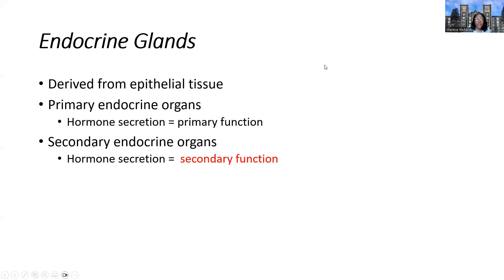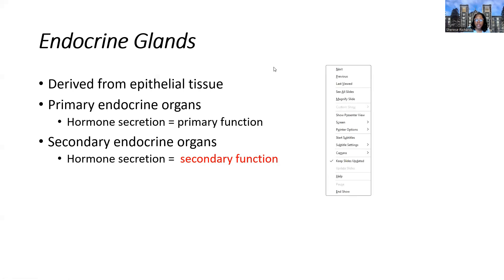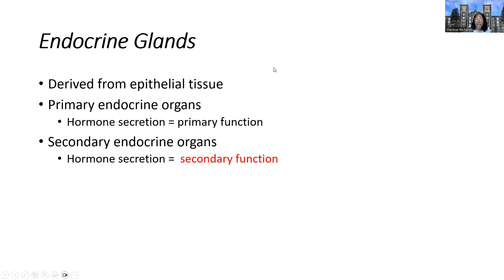To review: endocrine glands are epithelial tissue-derived. There is a distinction between primary endocrine organs, whose main role is to secrete hormones, versus secondary endocrine organs, which have another primary function but can also release hormones in an accessory capacity.